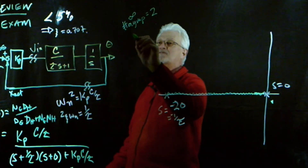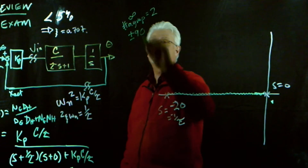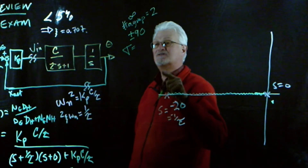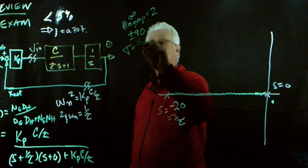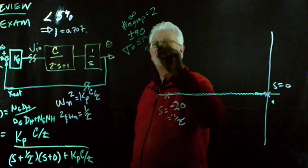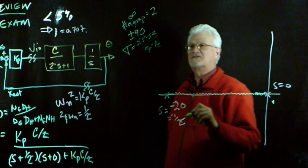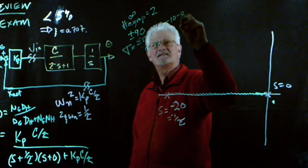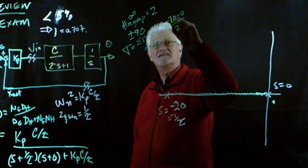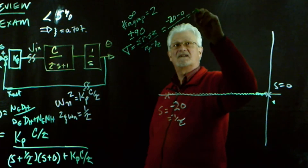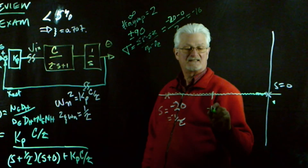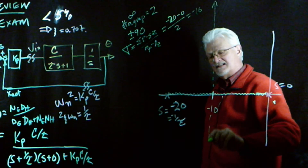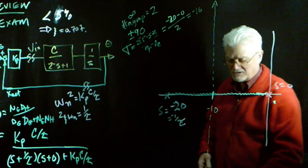The number of infinite asymptotes equals two. If you go through the equation it's plus or minus 90 degrees. The only thing we don't know is where the asymptotes intercept the real axis — that's the sum of the poles minus the sum of the zeros divided by the number of finite poles minus finite zeros. In this case that's zero minus negative 20 divided by 2, which is minus 10, right in the middle. So the infinite asymptotes go plus or minus 90 degrees.